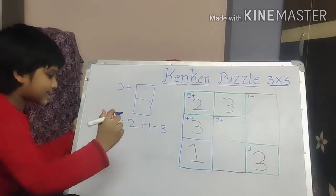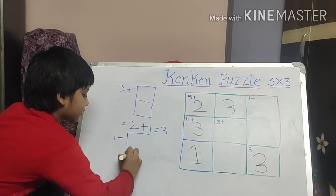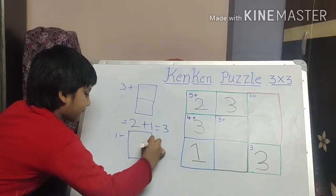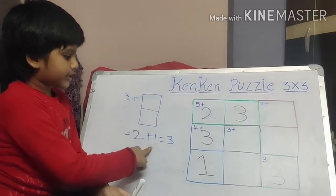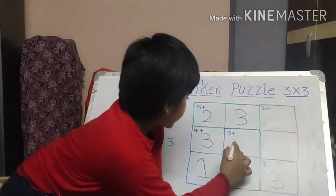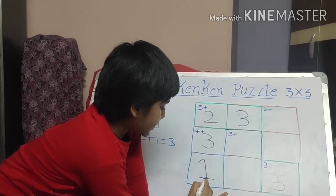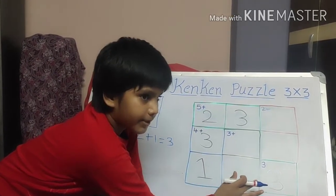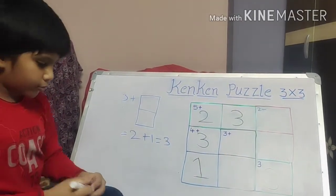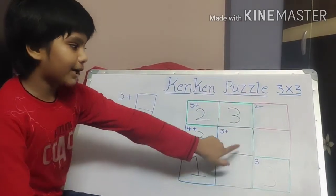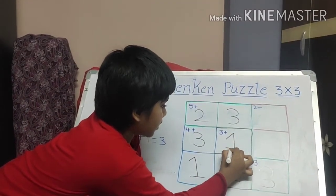Two plus one is equal to three. We have to write here two and one. Here one is repeated in this column. We have to not use here one. We have to use here two and one. Next, minus two.